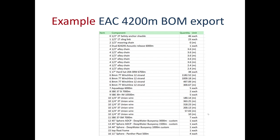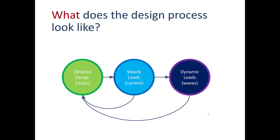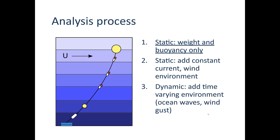You can export a bill of materials, which is automatically produced from what you've put together for the system — it gives you component counts. There's also an assembly layout that gives the order assemblies are added, and these are in Excel file formats, so they're easy to work with. This is the first stage in the detailed design, with estimates of top tension and anchor tension based on static weight and buoyancy of the mooring.